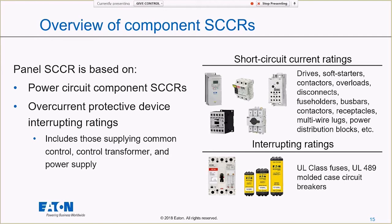Short circuit current ratings apply to pretty much every other component inside my panel: drives, power distribution blocks, fuse holders, etc. Short circuit current ratings can change because the device isn't doing something during the short circuit — it's waiting for an upstream device to open and protect it. Think about a power distribution block: when there's a short circuit, it just sits there waiting for the upstream device to open. So that short circuit current rating can change depending on what that upstream device is — it might have different ratings with a breaker versus a class RK1 fuse versus a class J fuse.